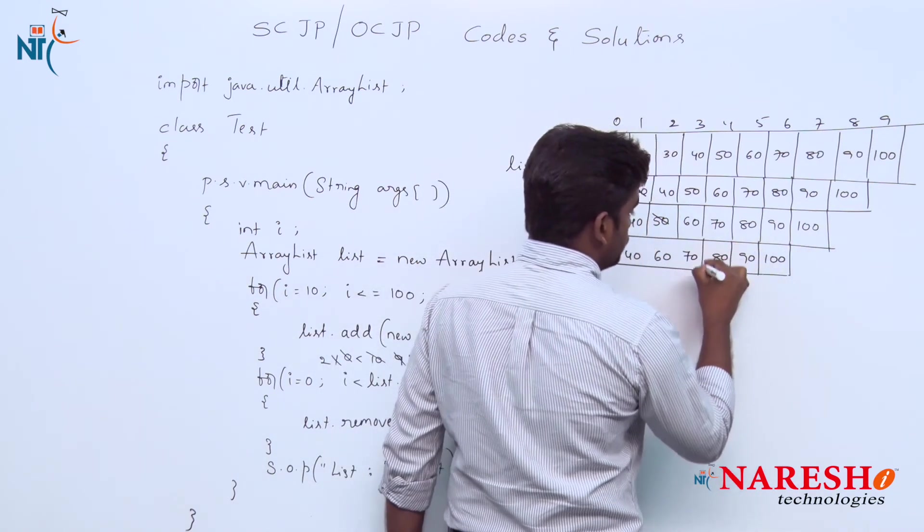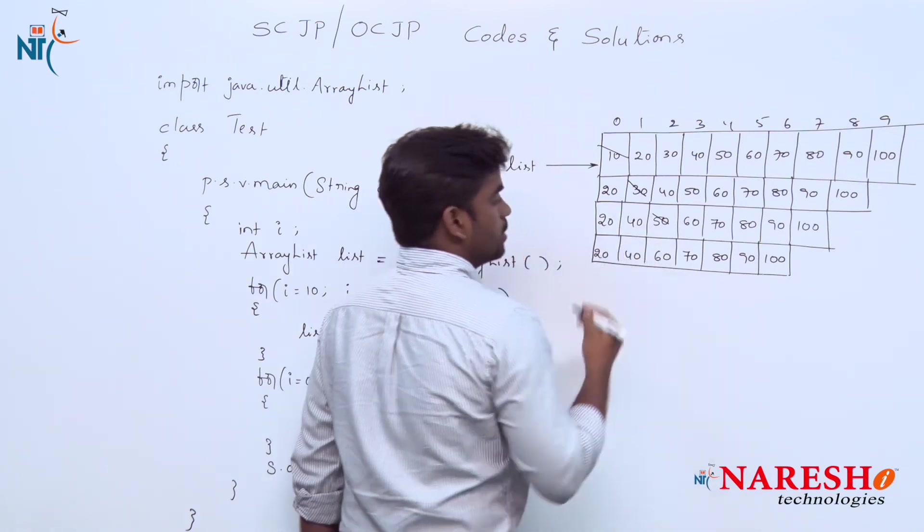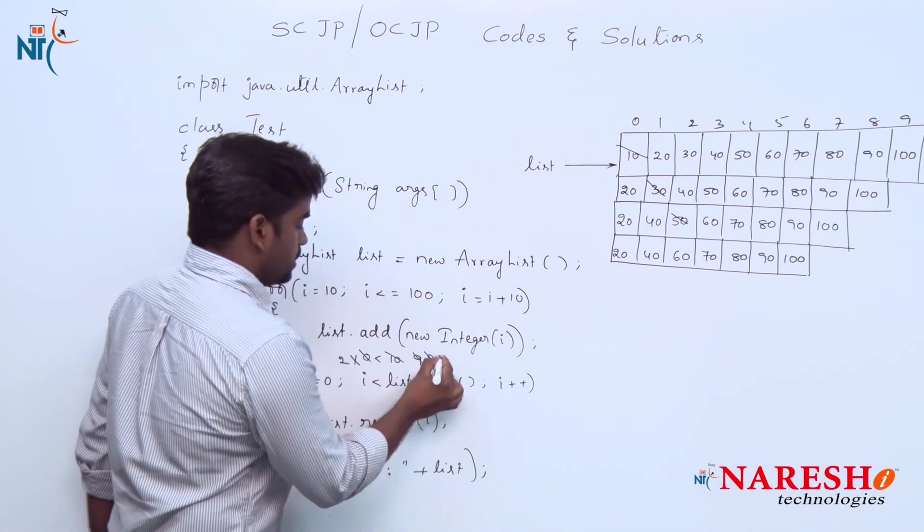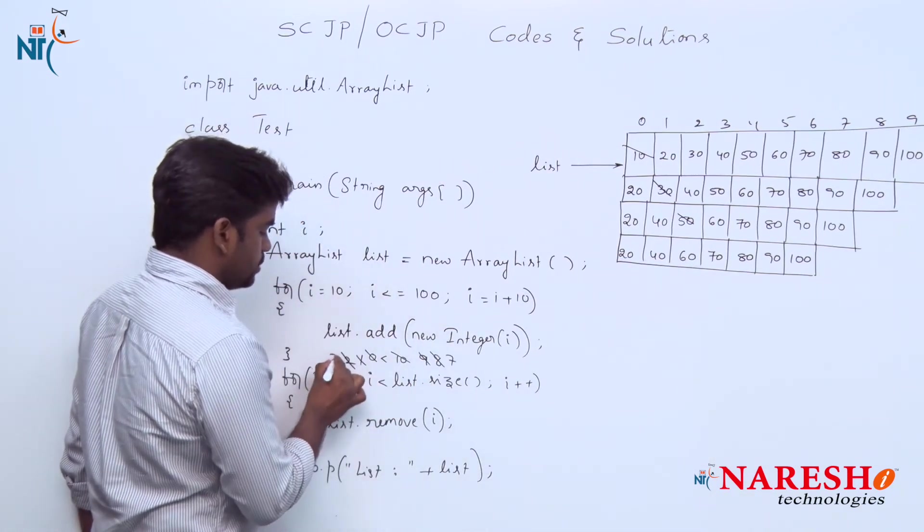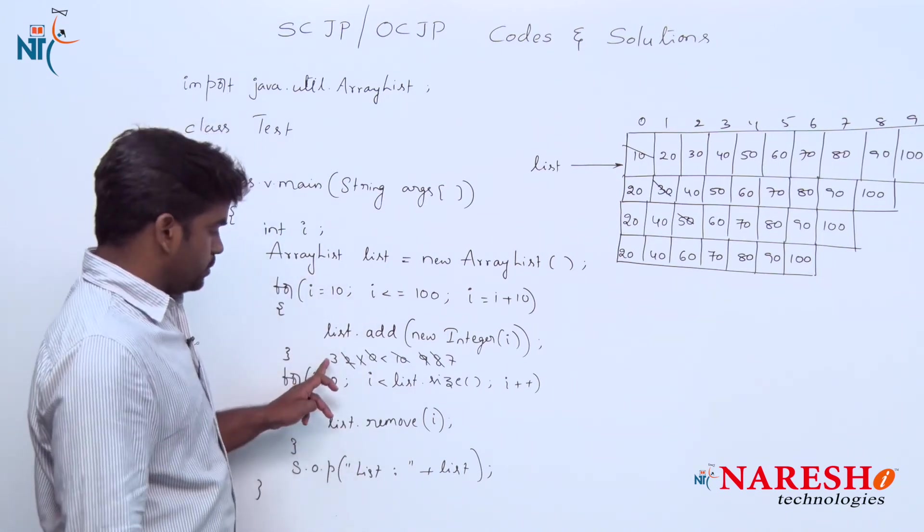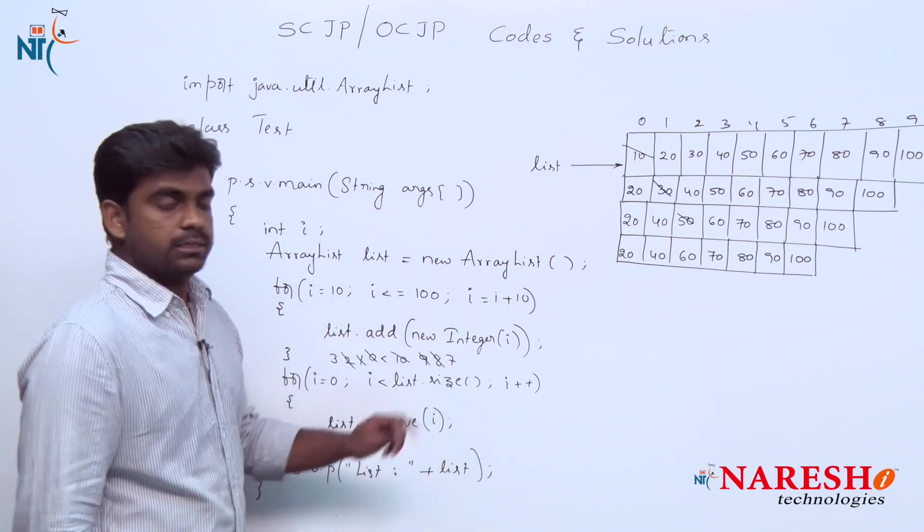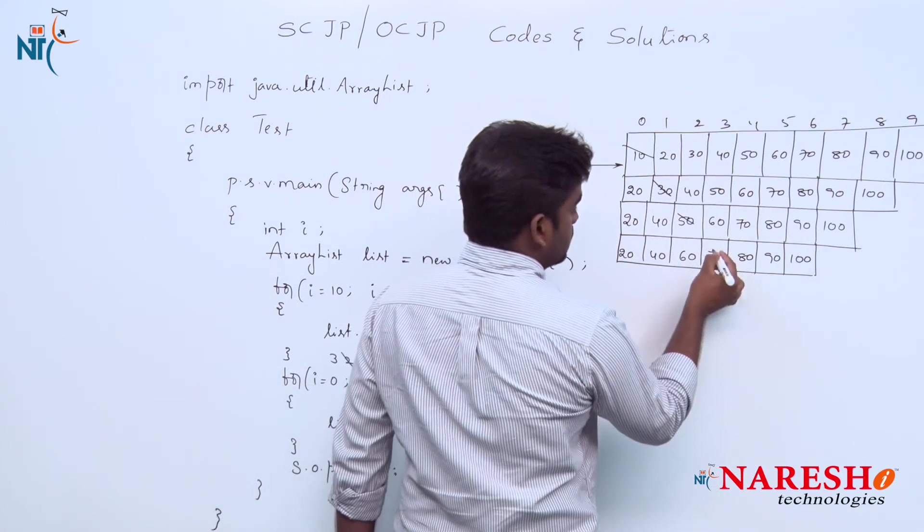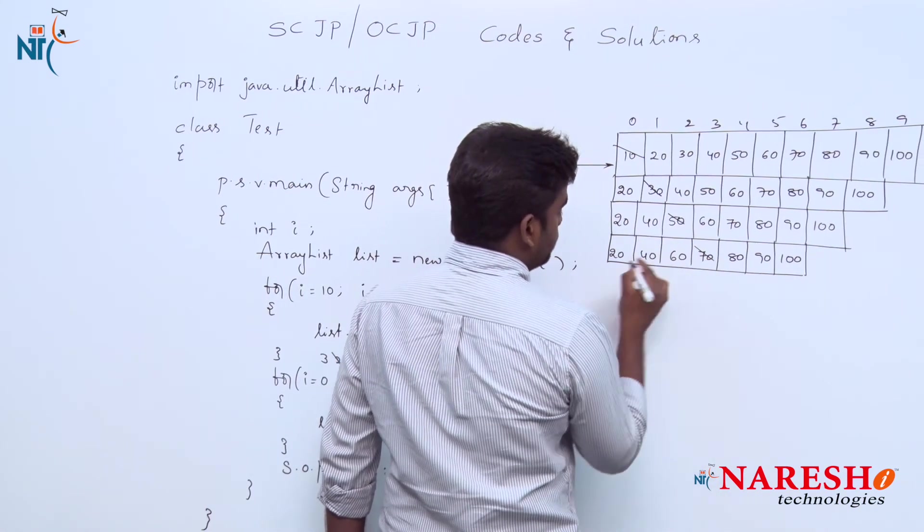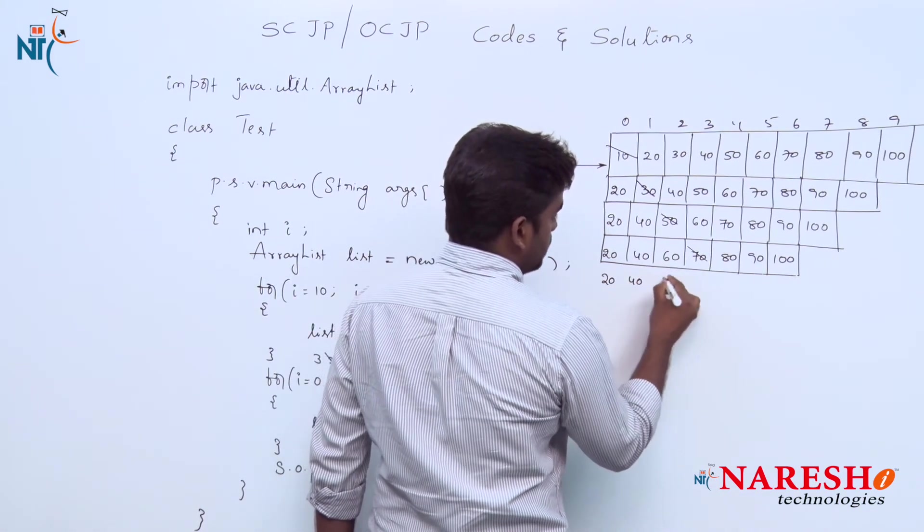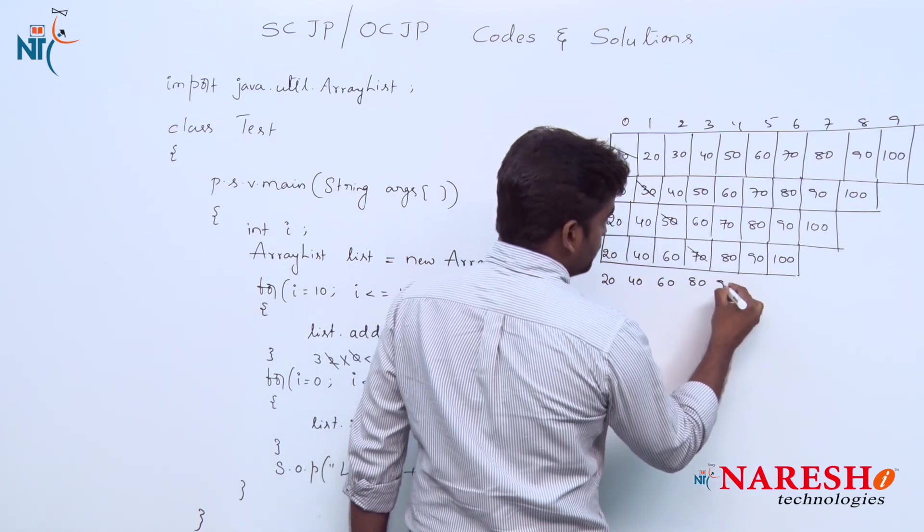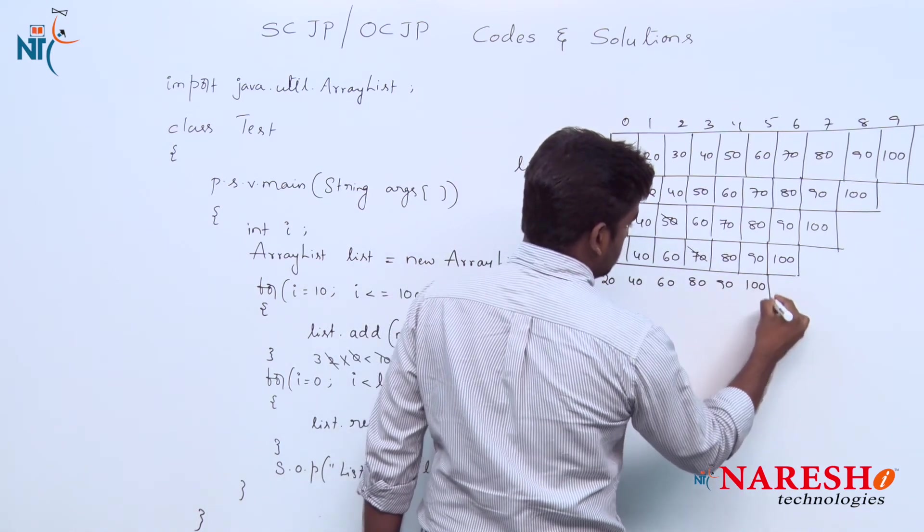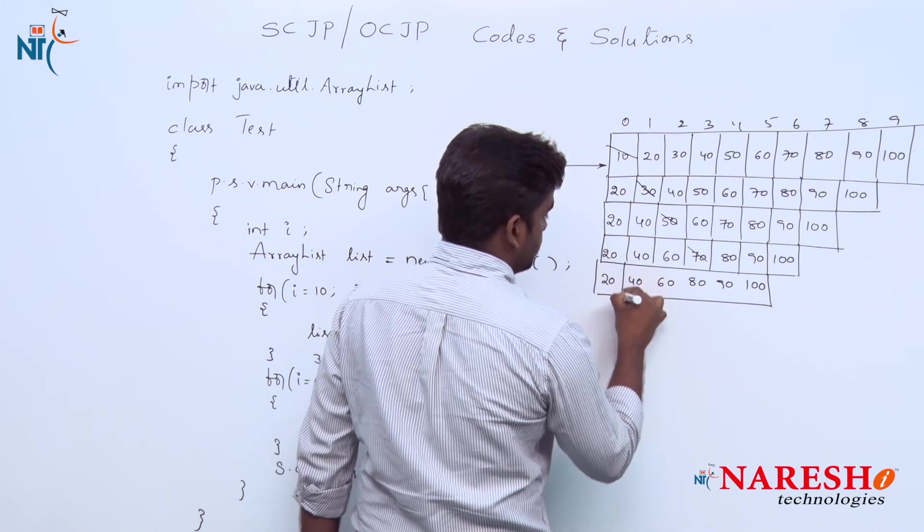The i value is increased to 3, condition is true. 3 is less than 7, condition is true. The third position element will be removed. So 20, 40, 60, 80, 90, 100.